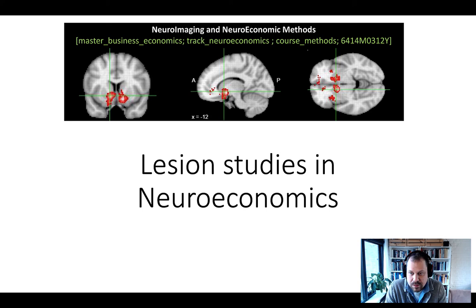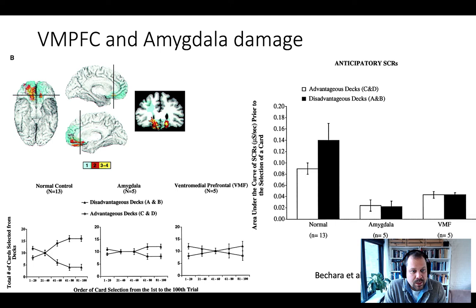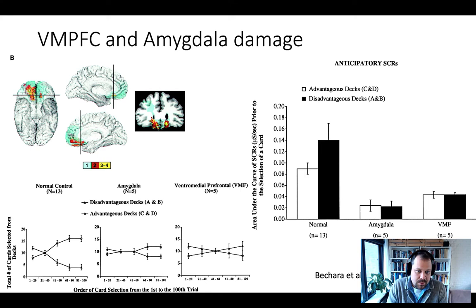One very prominent study is Beccara et al., published in the Journal of Neuroscience in 1999. They had three groups of subjects: a normal control group with no brain damage, an amygdala-lesion group with a relatively low number of subjects because they're difficult to recruit, and a VMPFC group, also five participants. They played a game called the Iowa Gambling Task.